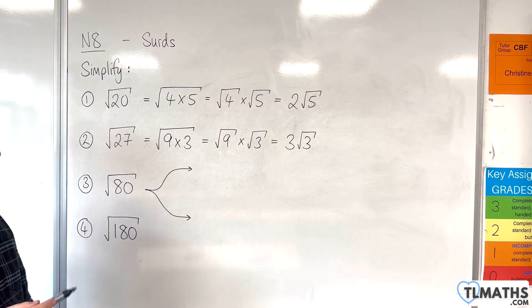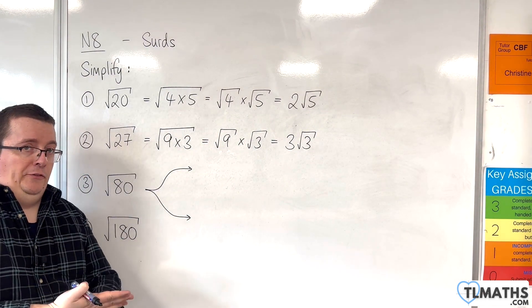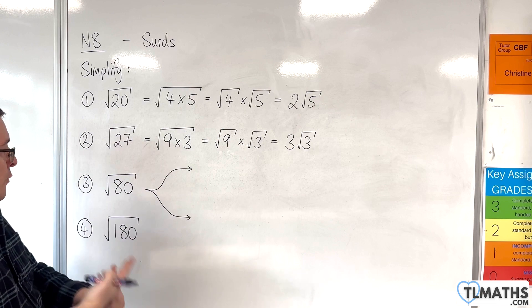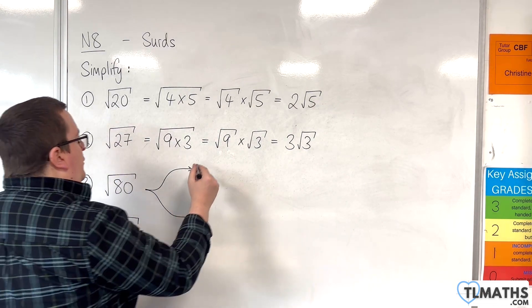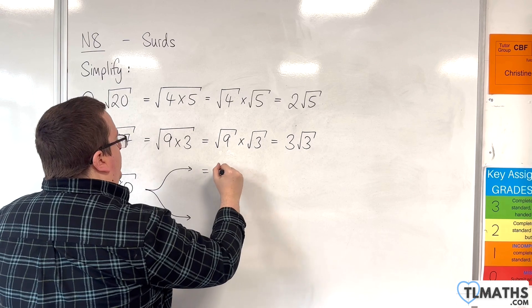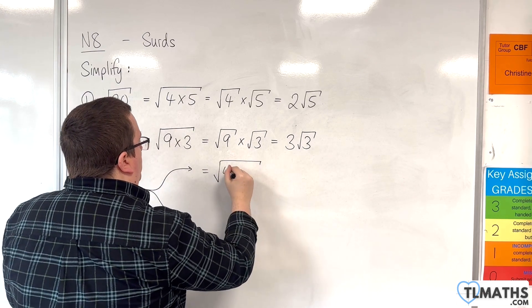So let's say you spotted 4 first. Now 4 goes into 80 20 times. So we can write this as the square root of 4 times 20.